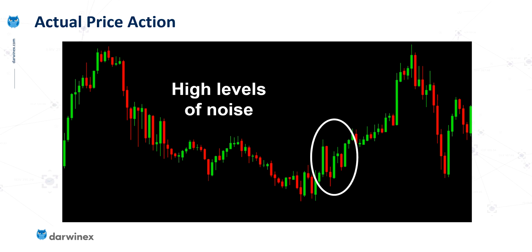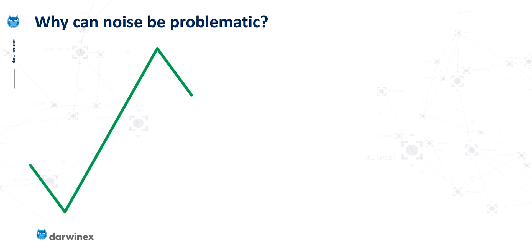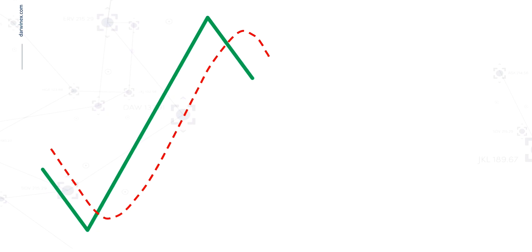So now we turn our attention to the main topic of today's episode: why is noise problematic to some trading strategies? To explore this we'll use a conceptual illustration. Let's first consider if price moves occurred in line with sentiment but without any noise at all — that's what these straight green lines reflect. Here we could have a simple moving average overlaid on top of the price action.